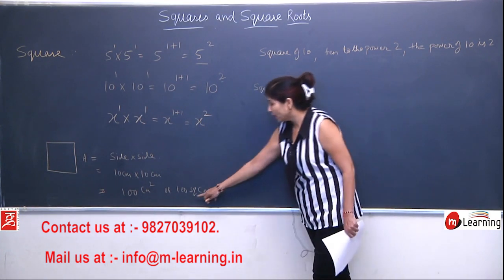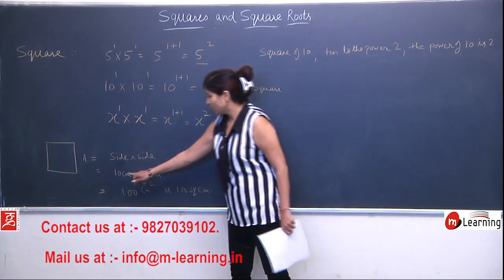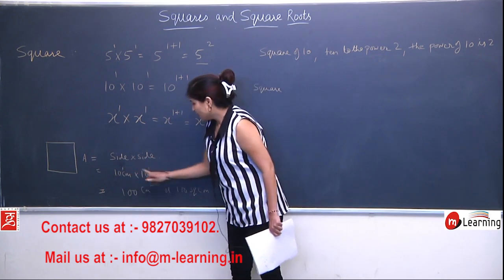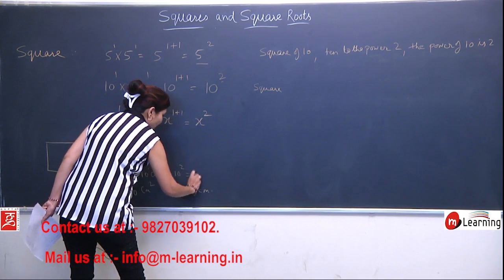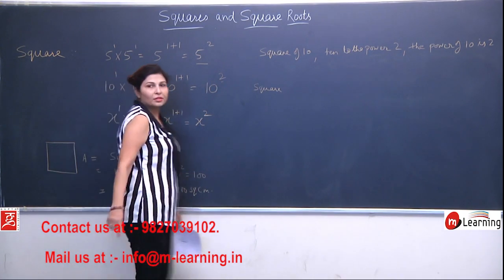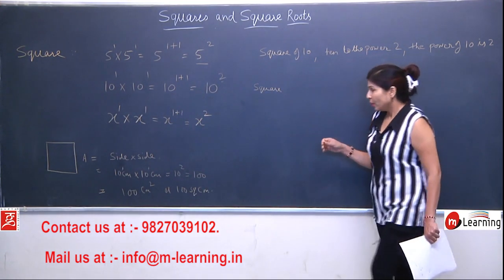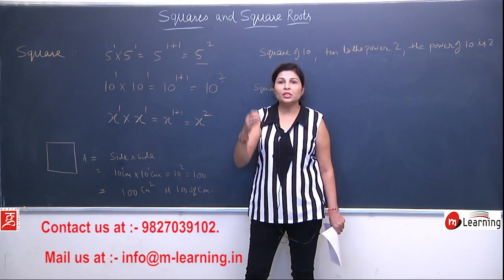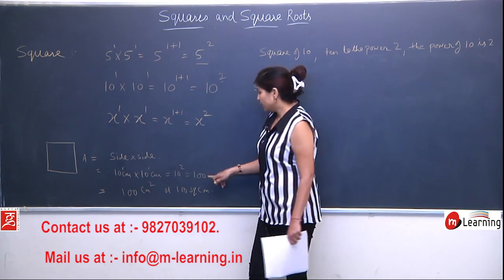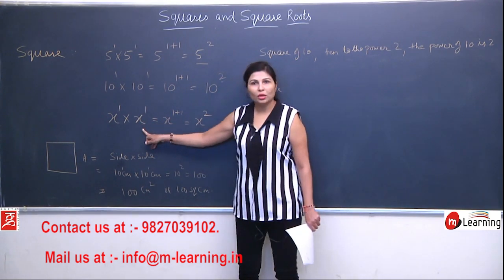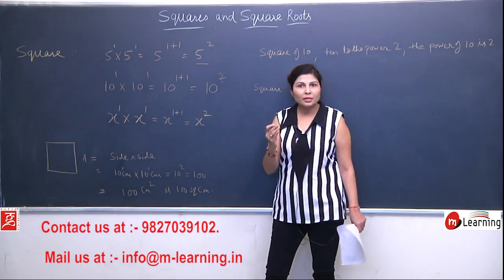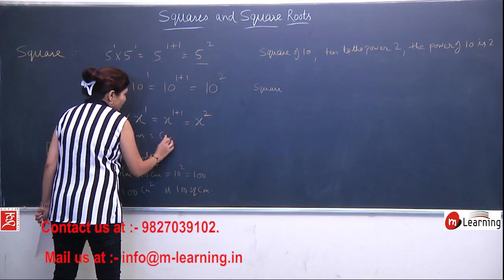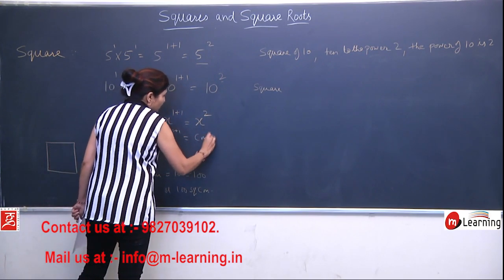When we didn't understand what this 'square' was — where it was generated from — here, this 10 has no written power, which means its power is 1. So 10 to the power 1 times 10 to the power 1: powers add up to give 10 to the power 2, which equals 100. That's why we always wrote '100 square centimeter'. Because 10 multiplied by 10 gave the number, and centimeter multiplied by centimeter also happened. Whenever any quantity multiplies by itself, it converts into square — just like x times x becomes x square. Similarly, centimeter times centimeter: 1 plus 1 equals centimeter square.